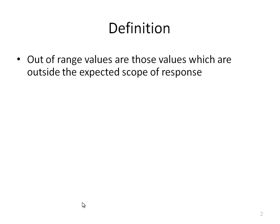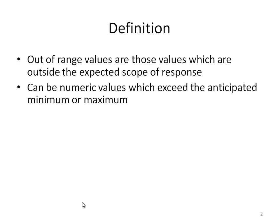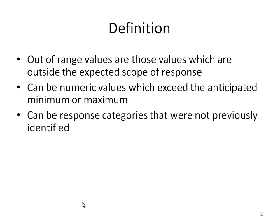A quick definition: out-of-range values are those values which are outside the expected scope of response. They can be numeric values which exceed the anticipated minimum or maximum. They can be response categories that were not previously identified or anticipated. You add a new test, a new type of test, or a new drug comes on the market after the forms were designed — that would be a new category.